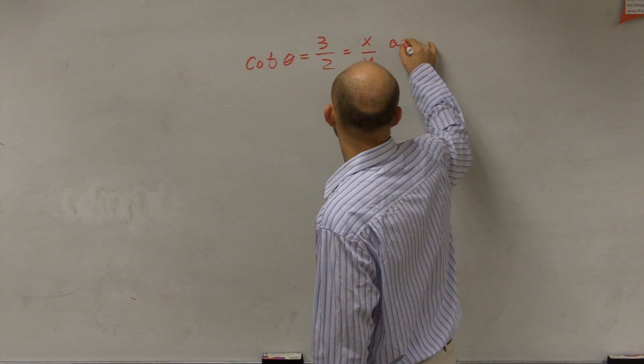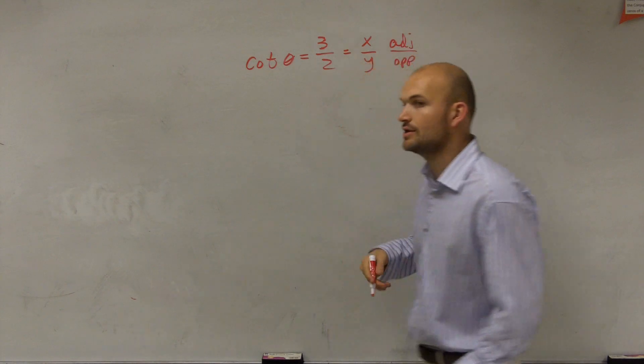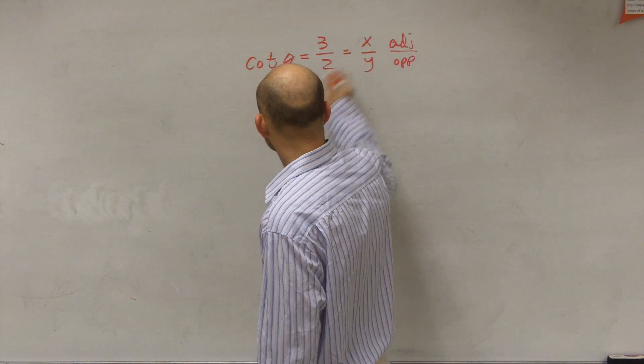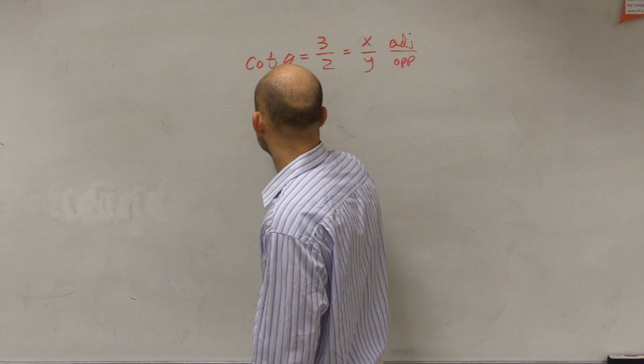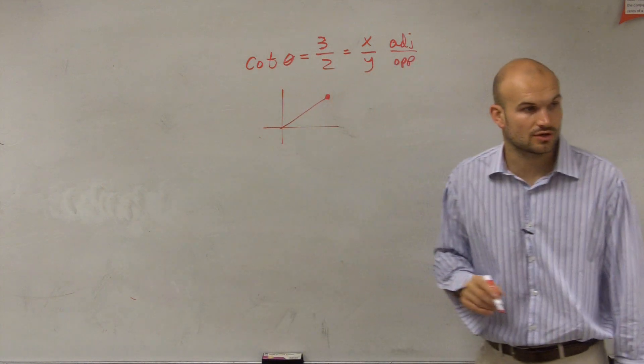Or what we could say is your adjacent over your opposite. Therefore, I can go and create a triangle just with those two points. So if you think of your cotangent 3 over 2, you could see it's a little point right there that's off the unit circle.